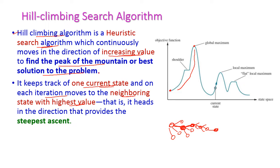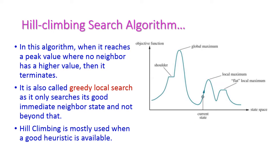This is called the hill climbing algorithm. At the end we will get the steepest ascent. When this algorithm terminates — if it reaches the peak value and no other neighbor has a higher value — then the program terminates. It is also called a greedy local search algorithm because it only searches the good immediate neighbor state and not beyond that.